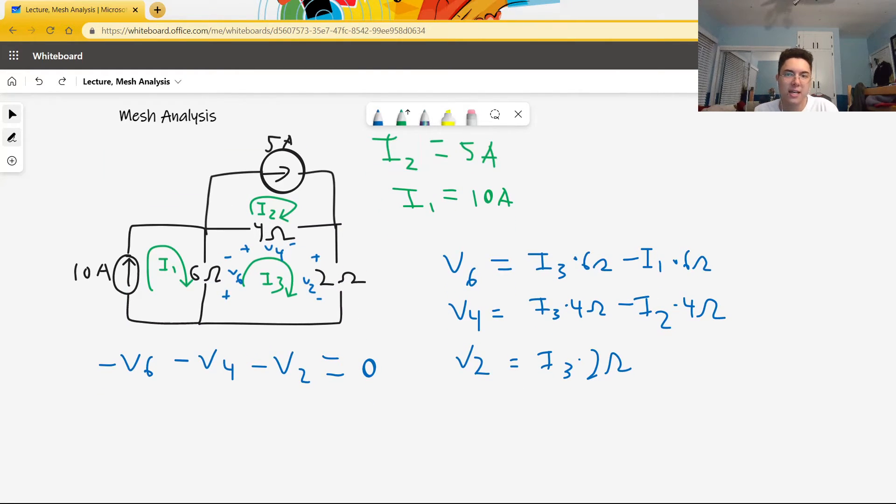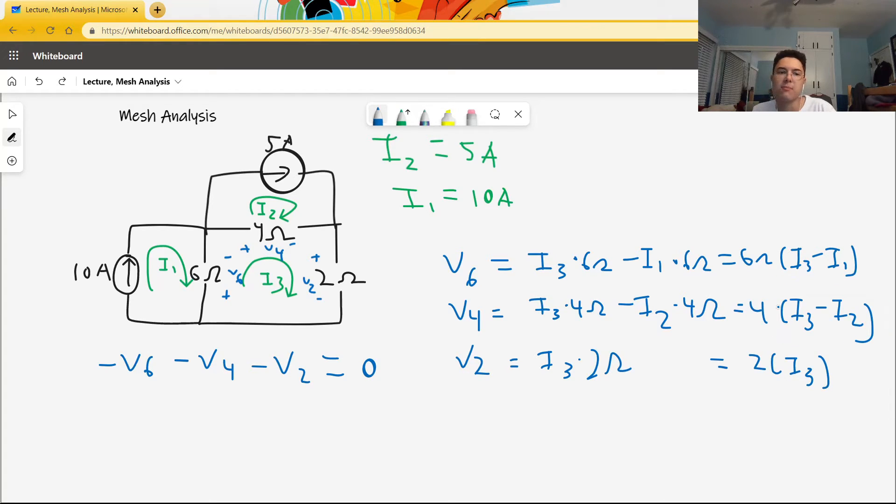Anyway, we can now plug these things into KVL. It's convenient to write this as 6 ohms times (I3 minus I1), for reasons we'll see shortly. Thus, this term is 4 times (I3 minus I2). Let's plug this into the equation, turning everything into pluses. V6 becomes 6(I3 minus I1), V4 becomes 4(I3 minus I2), and V2 becomes 2 I3, and this all equals 0.